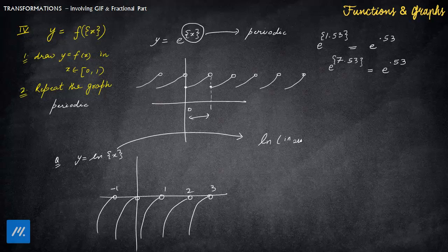ln ka jo input hai, this input should be positive. And we know that fractional part is positive. It is positive or at max 0. We know that it is positive. So it will be drawn for each and every value because it satisfies the domain now.